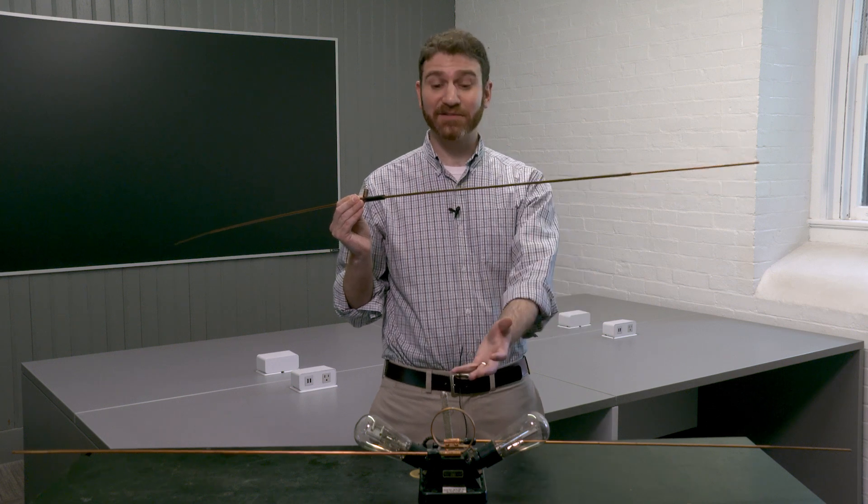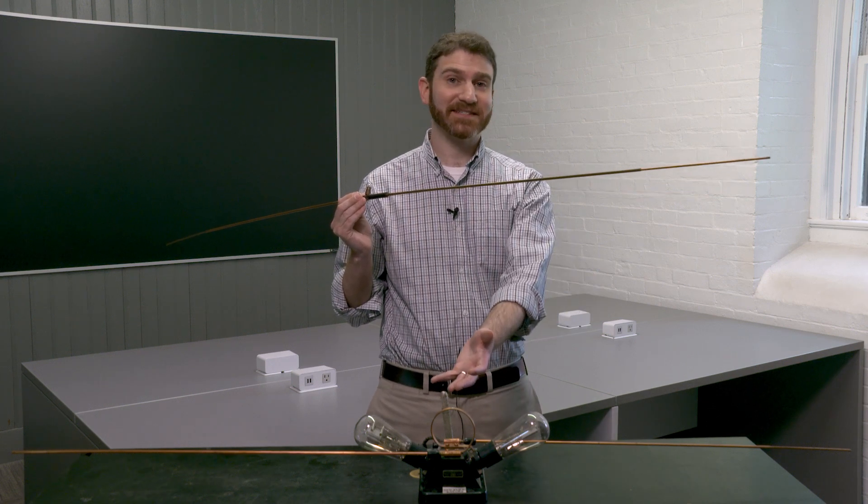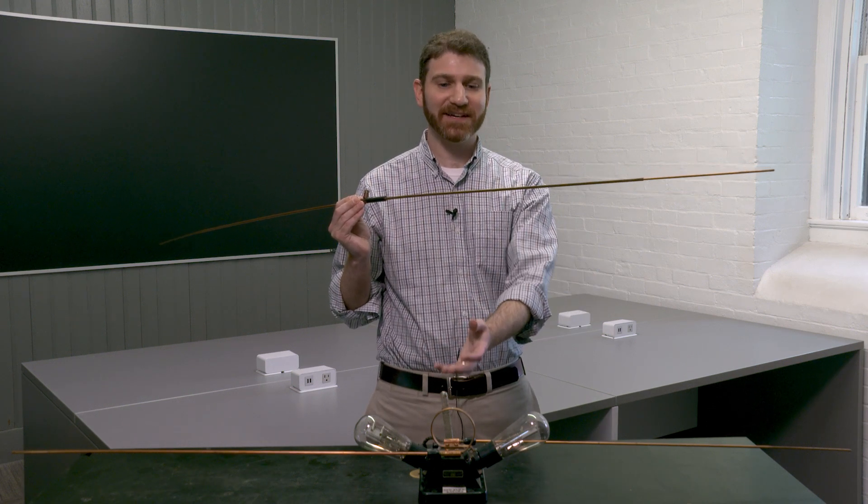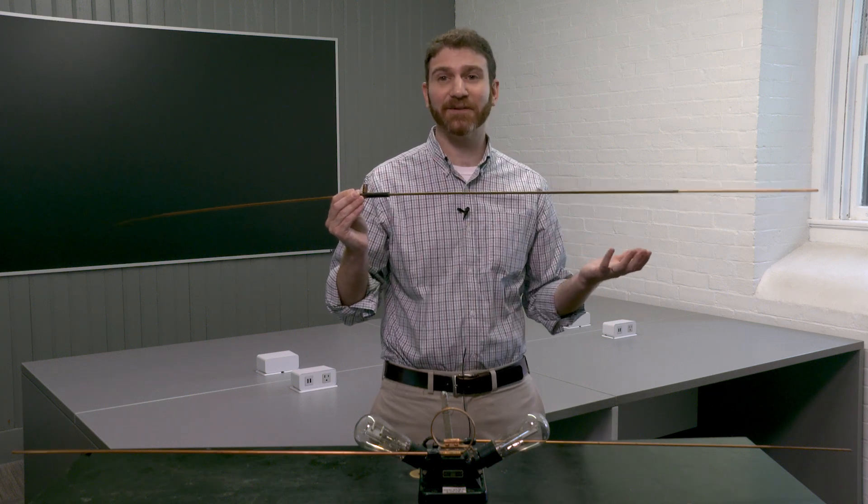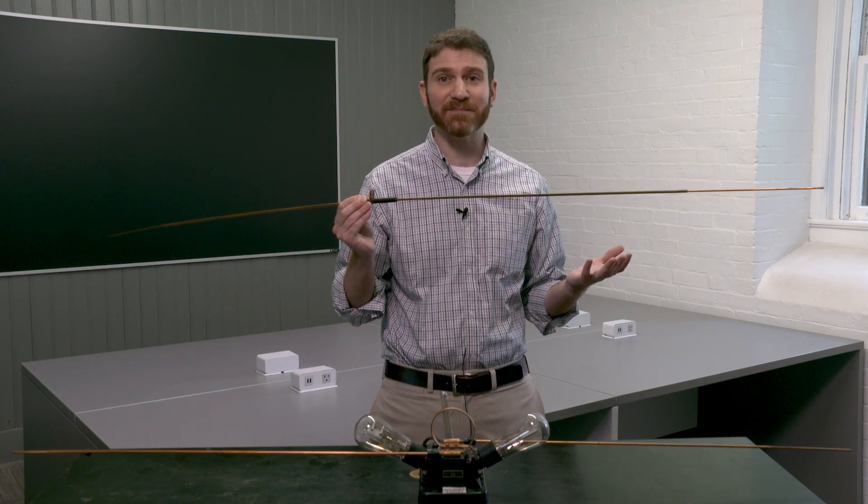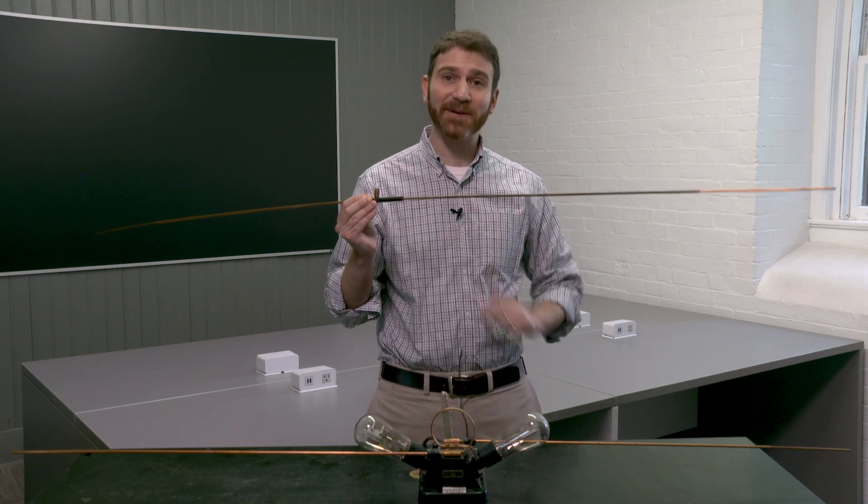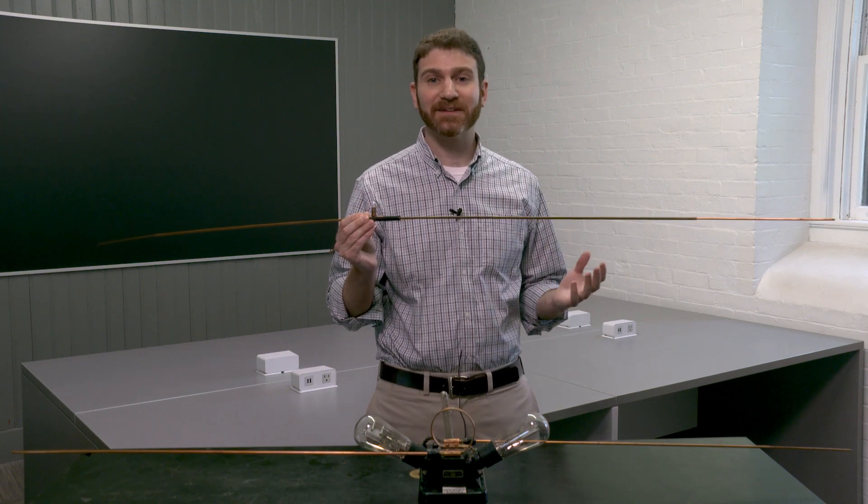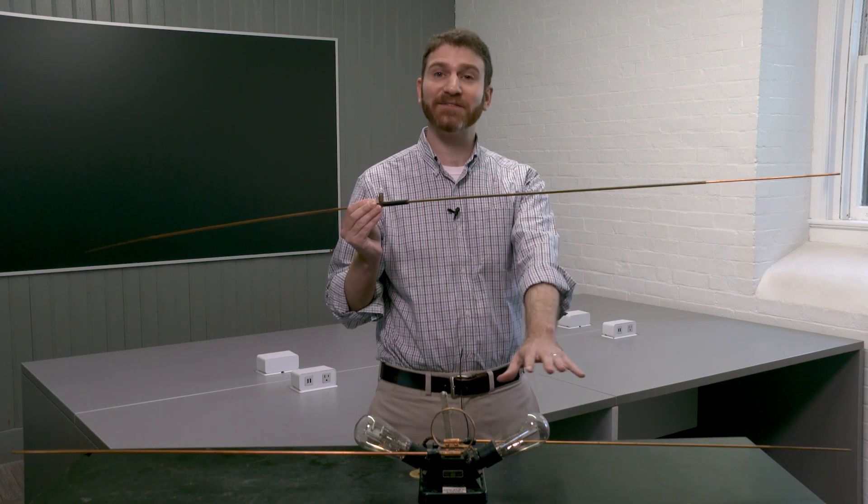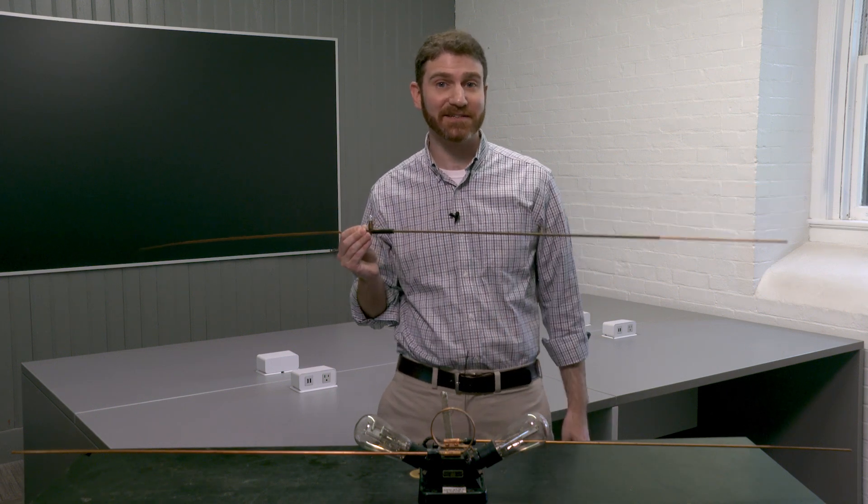So what we have here is a radio transmitter. When we flip the switch, this is going to turn on and make radio waves. And here in my hand is a radio antenna, just a simple piece of metal with a little light bulb here in the middle. It's going to light up when we're receiving the radio waves from the transmitter. So let's go ahead and turn that transmitter on.